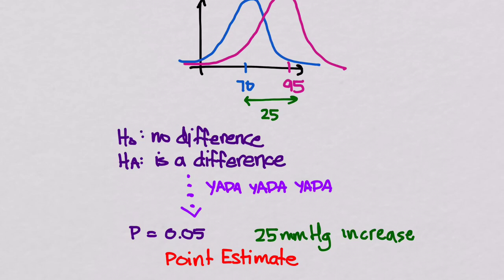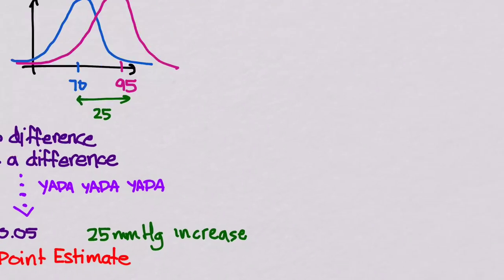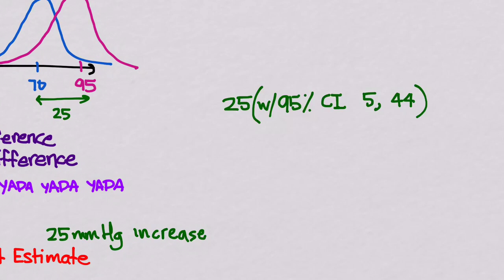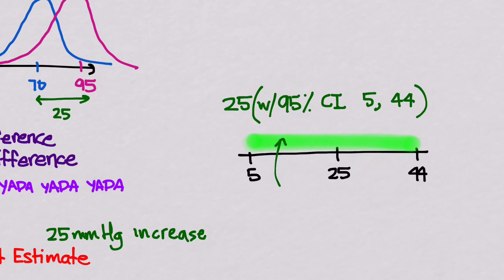That's great, but we can do better by using a confidence interval. With a confidence interval, we would report that the value is 25, with a 95% confidence interval that the value is between 5 and 44. This gives us a lot more information — it says that we are 95% sure that the real value is between 5 and 44.